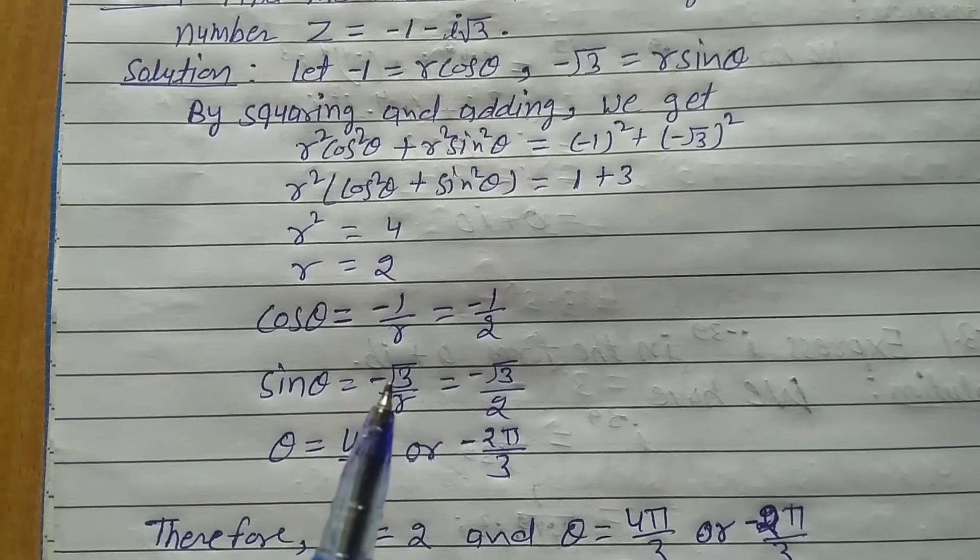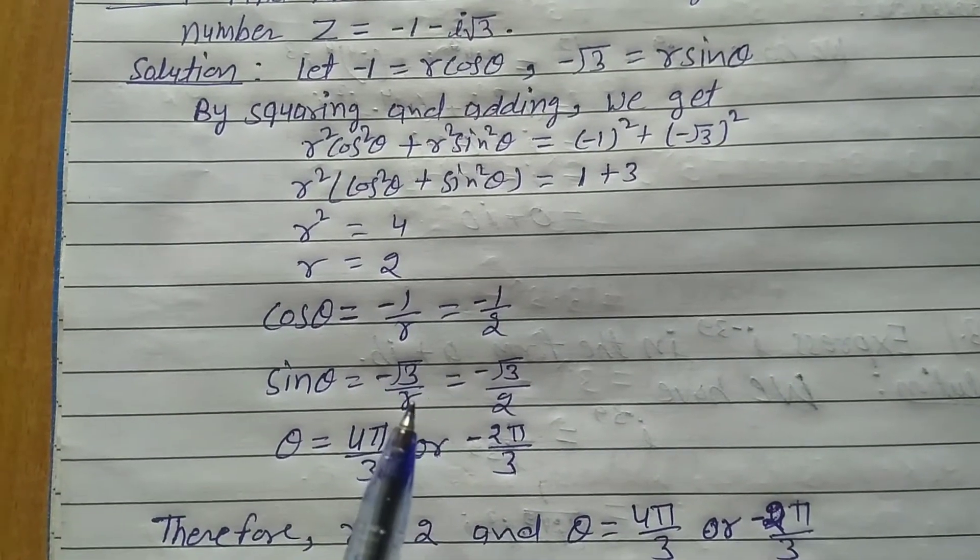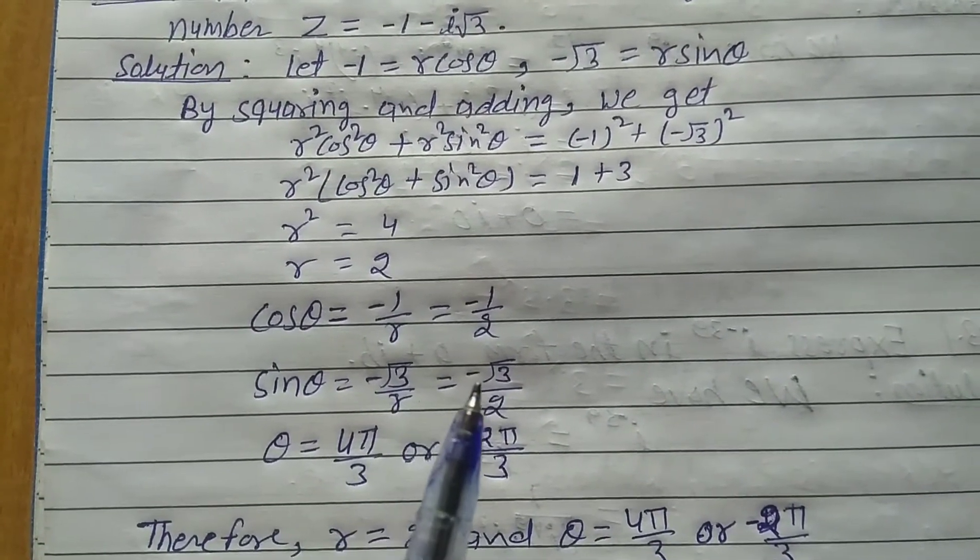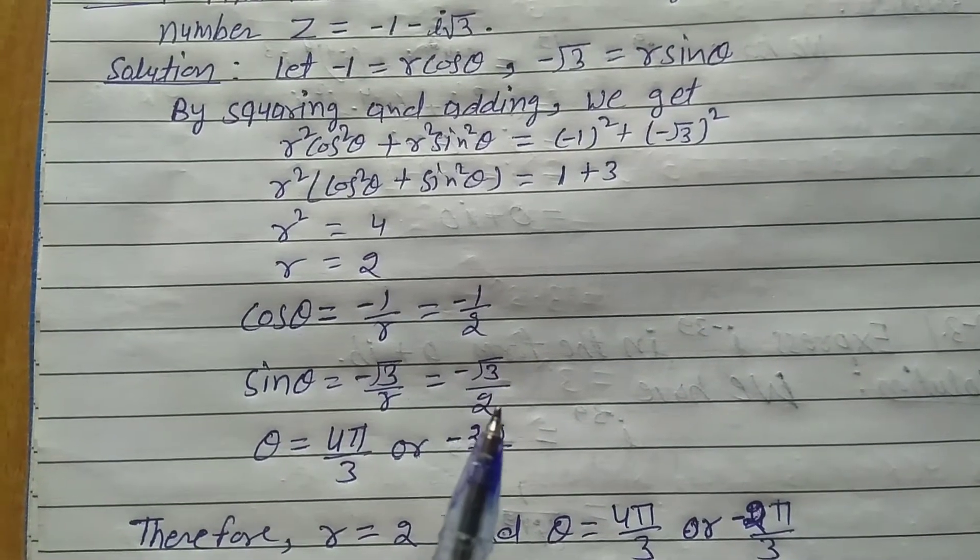Sin θ = -√3/r. The r value is 2, so sin θ = -√3/2.